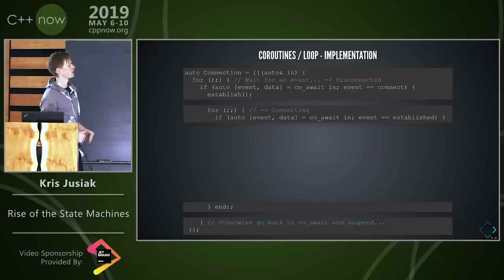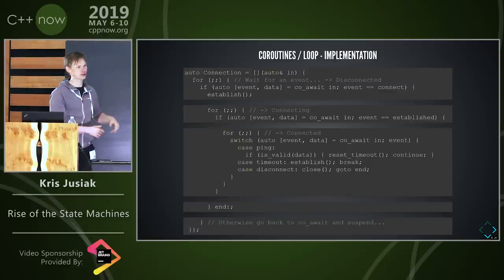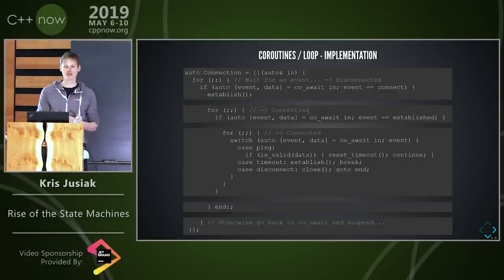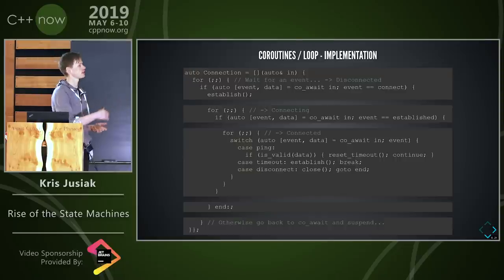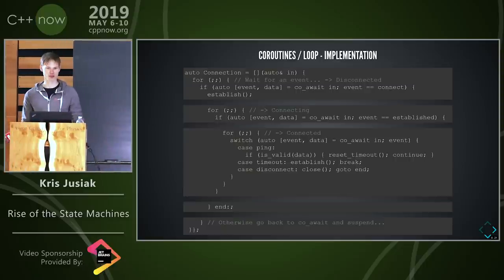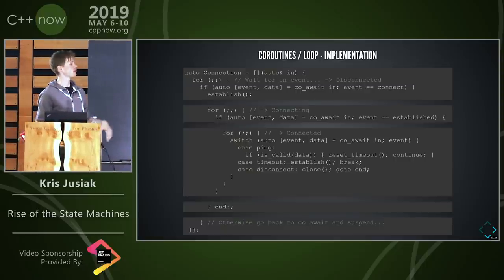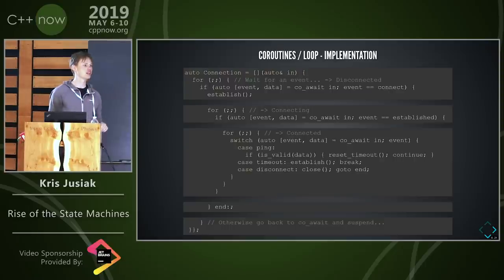That was the disconnected loop. Then we go to another loop for connecting — same thing, if we get 'established' we proceed, otherwise go back to the loop. Then yet another loop meaning we're in connected state: if we get a ping we check for timeout. The important part is that the state is represented by the position in the function, and we always come back to that position when we resume.